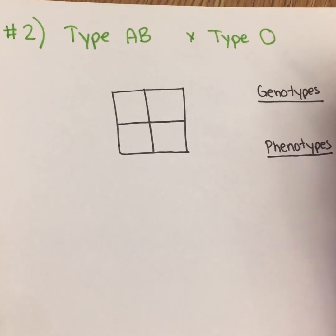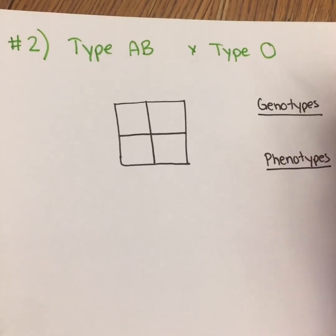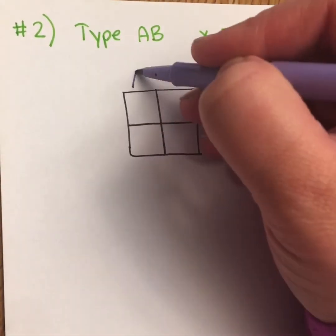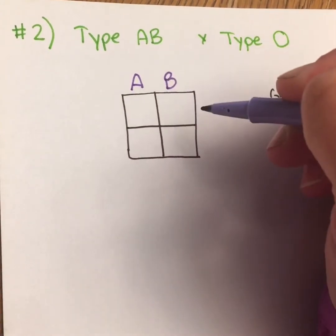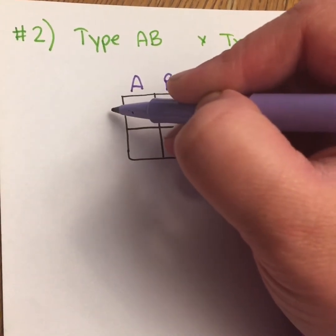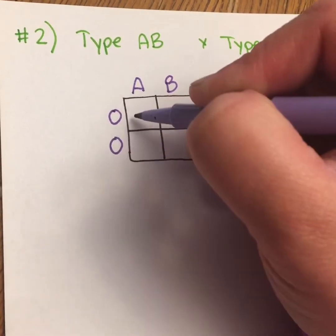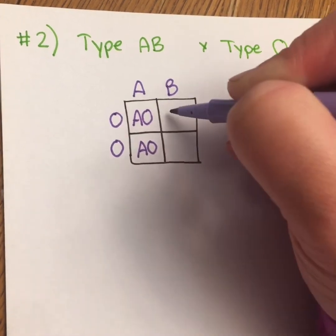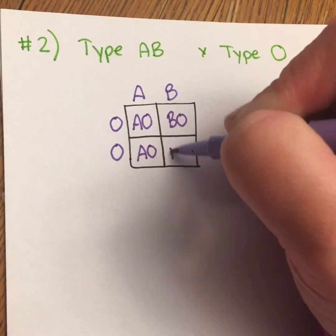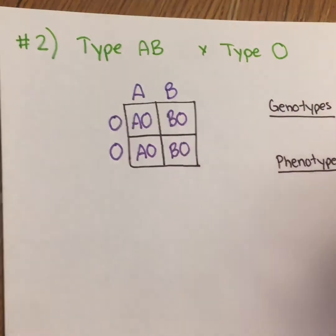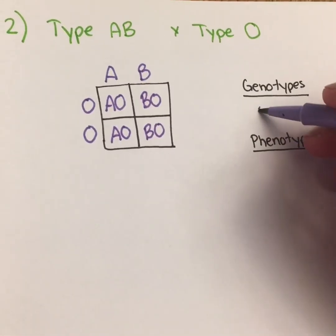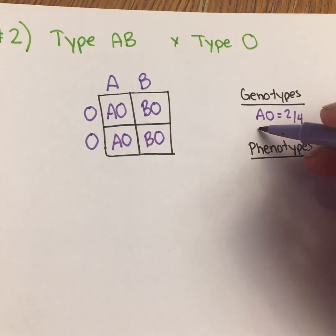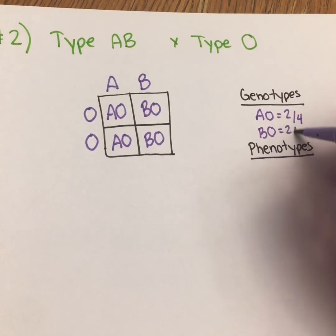Let's try a second example together. We're going to cross an individual with type AB blood with an individual with type O blood, remembering that A and B are co-dominant and O is recessive. In order to have type O blood, a person has two O alleles. So one box will give A and O, and the other box will also give A and O — wait, we get AO and BO. For genotypes: one possibility is AO, two out of four, and another possibility is BO, also two out of four.